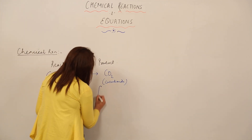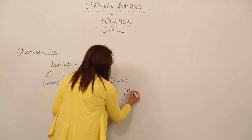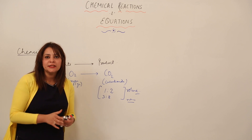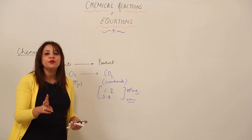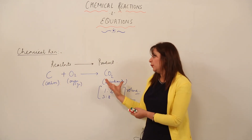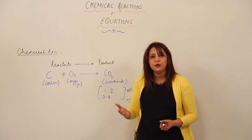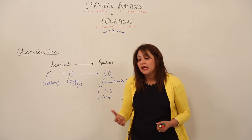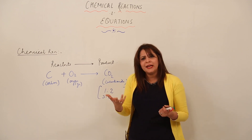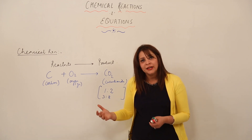Moreover, to form CO₂, you must strictly use carbon and oxygen elements. By the law of constant proportion, the ratio of their combination is fixed: the volume ratio is 1:2 and the mass ratio is 3:8. So if you need CO₂, you take C and O₂ in volume ratio 1:2 and mass ratio 3:8. The properties of the compound CO₂ are not similar to the reactants.